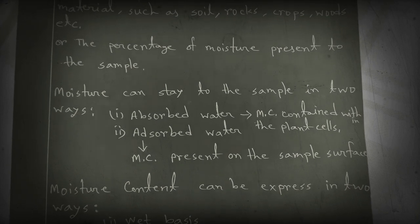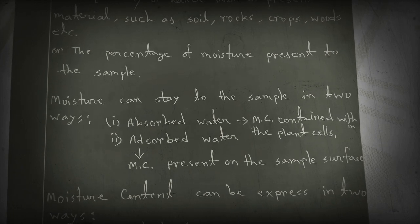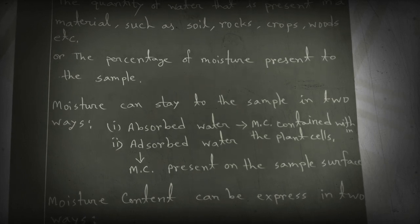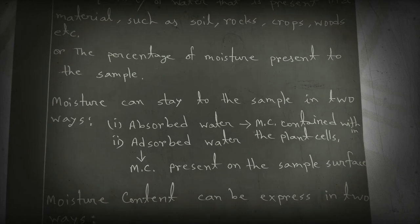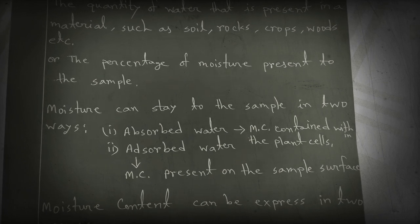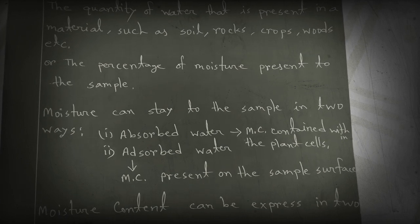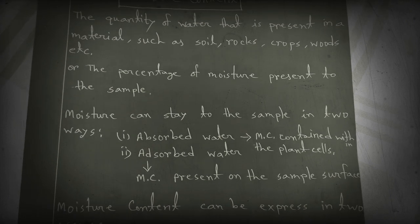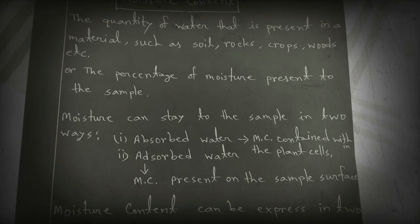Moisture can stay in a sample in two ways: absorbed water and adsorbed water. Absorbed water is the moisture content contained within the plant cells or grain cells. Adsorbed water is the moisture content present on the sample surface or grain surface. So absorbed water is on the inner side of the grain and adsorbed water is on the outer surface.